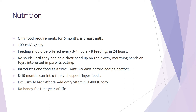When introducing foods, do it one at a time — for example, sweet potatoes only for three to four days, then peas for three to four days, to monitor for allergic reactions. At eight to ten months you can introduce finely chopped finger foods. Exclusively breastfed babies should receive a daily vitamin D supplement — that may be a test question. No honey for the first year of life, as it can transfer botulism.